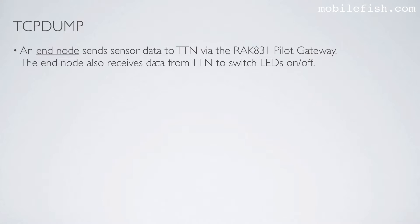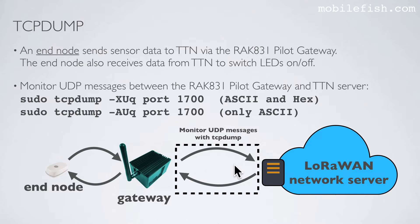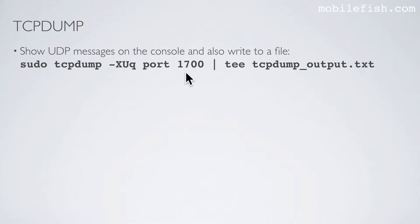I will now show a demonstration where an end node sends sensor data to the Things Network via the RAC A31 Pilot Gateway, and the end node also receives data from the Things Network to switch LEDs on or off. TCPdump is used to monitor UDP messages between the RAC A31 Pilot Gateway and the Things Network server. You can use a command to show ASCII and HEX values, or a command to show only ASCII values. For this demonstration I am using a specific command.